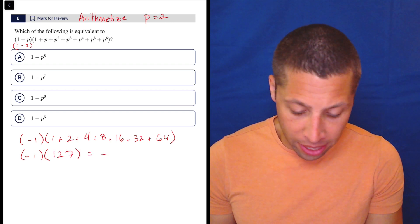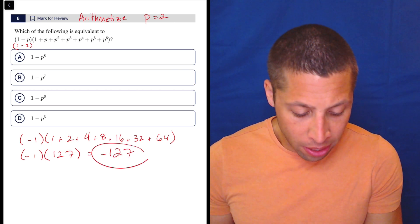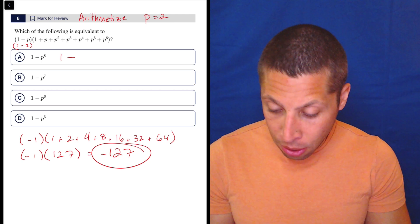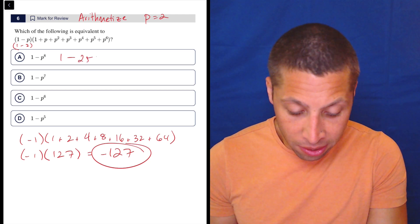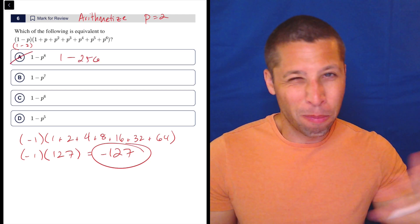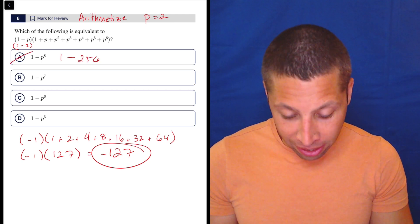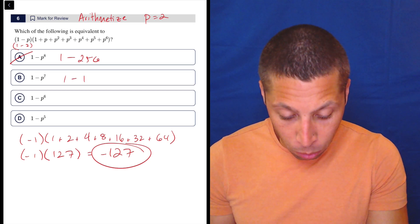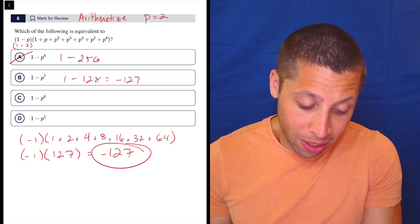One plus two plus four plus eight plus sixteen plus thirty-two plus sixty-four is one hundred twenty-seven. So this whole thing is negative one hundred twenty-seven. So is that an answer here? So this would be one minus two to the eighth is two hundred fifty-six. Nope, that's too small, I guess, technically. So that doesn't work. This is one minus two to the seventh. So that's one hundred twenty-eight. So that's negative one twenty-seven. That looks good.